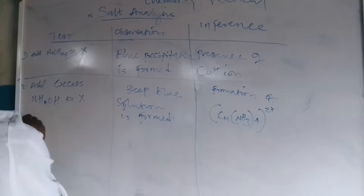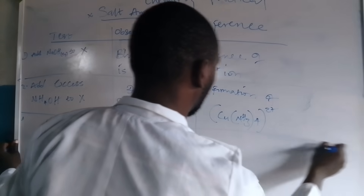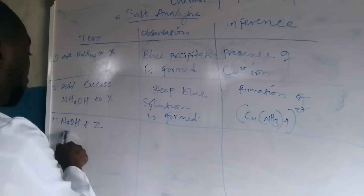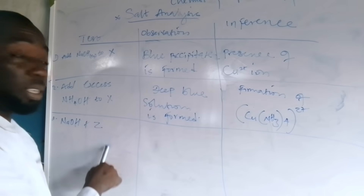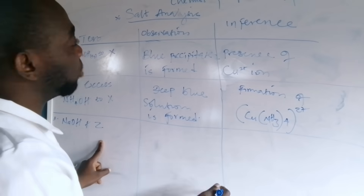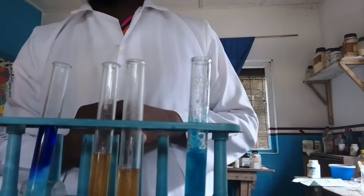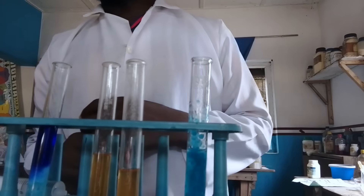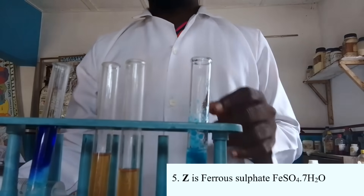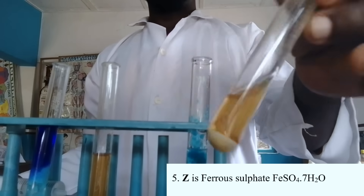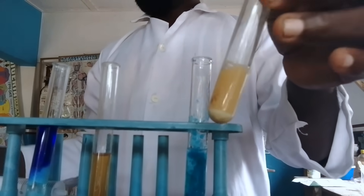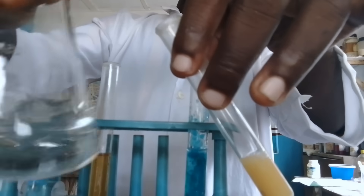Now let's go over to the third test: sodium hydroxide plus X plus Z — sodium hydroxide plus Z. We are going to be adding sodium hydroxide to iron sulfate. This is our iron sulfate, and these are our sodium hydroxide solutions.